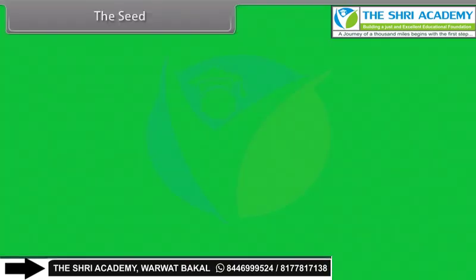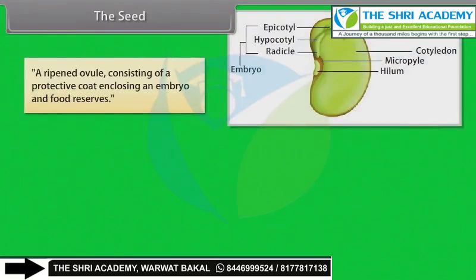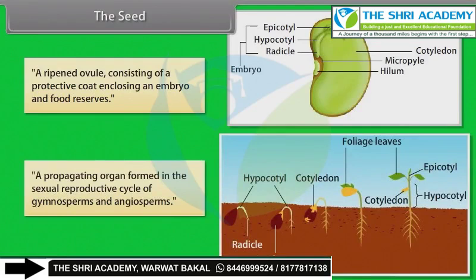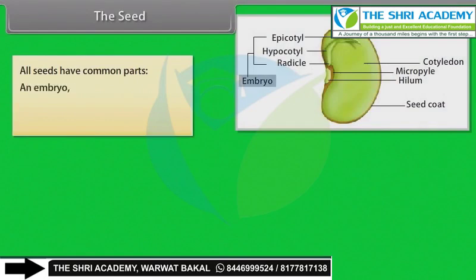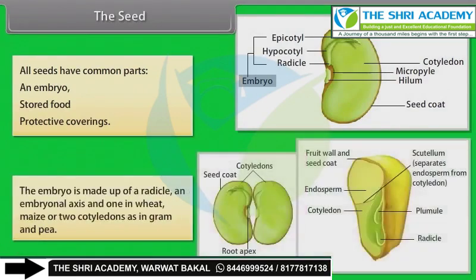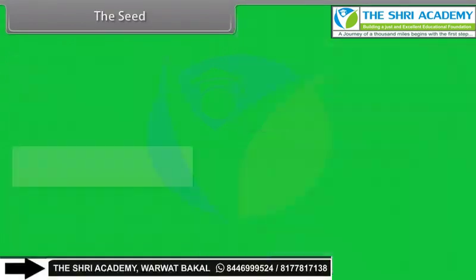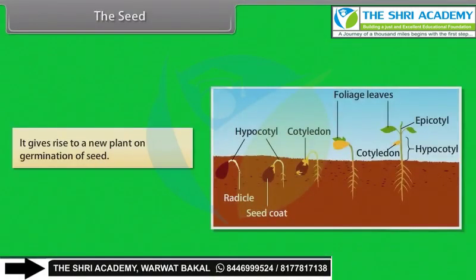The seed is a ripened ovule consisting of a protective coat enclosing an embryo and food reserves. It is a propagating organ formed in the sexual reproductive cycle of gymnosperms and angiosperms. All seeds have common parts: an embryo, stored food, and protective coverings. The embryo is made up of a radicle, an embryonal axis, and one cotyledon as in wheat and maize, or two cotyledons as in gram and pea.